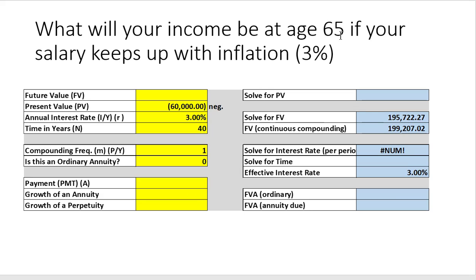The first question is: what will my income be at age 65 if my salary keeps up with inflation at 3%? Using the time value worksheet, we can calculate this. Present value is $60,000 per year, inflation is 3%, there are 40 years until retirement, compounding once per year. That means the last year of my work life, I need to earn roughly $195,722 per year.